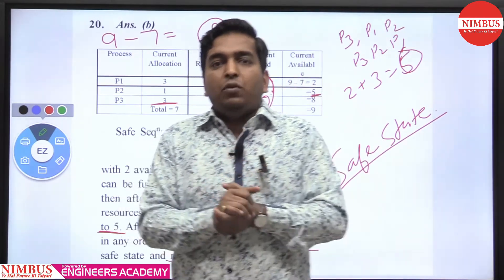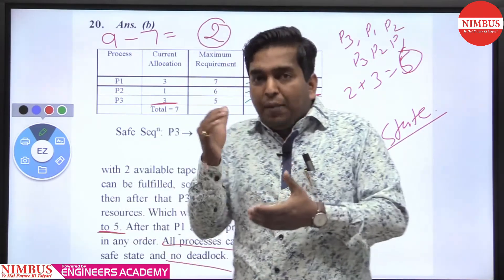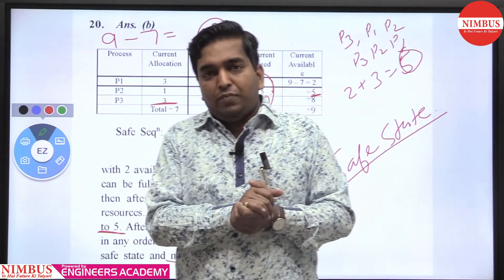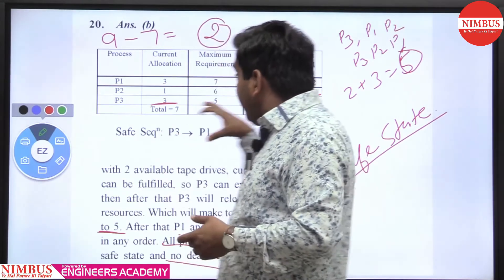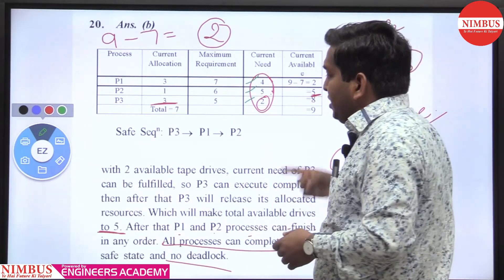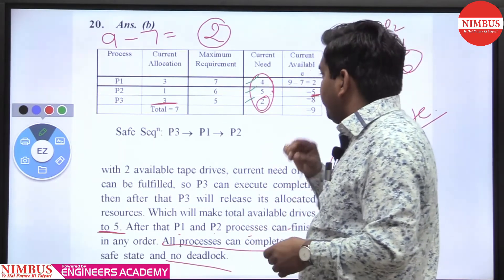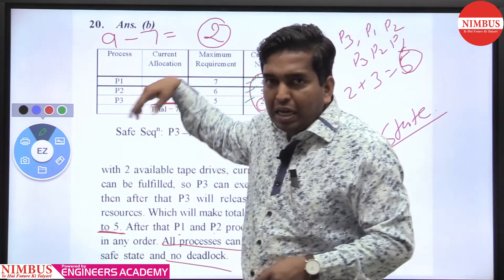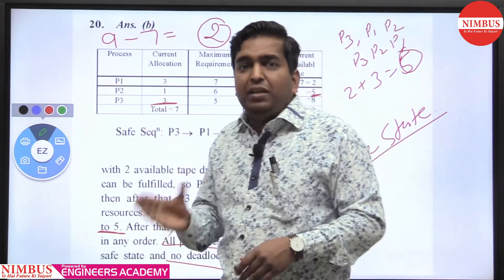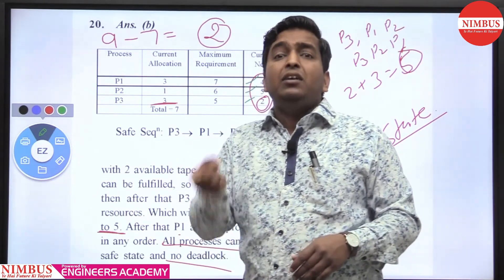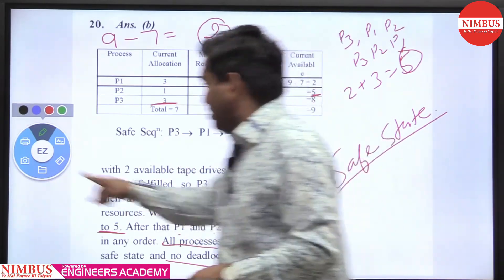We can have a unique safe sequence or multiple safe sequences — it depends on the available resources and requirements of the processes. If we cannot satisfy all remaining needs, the system may be in an unsafe state. For example, if we can satisfy P3 and P1 but not P2, that is unsafe.